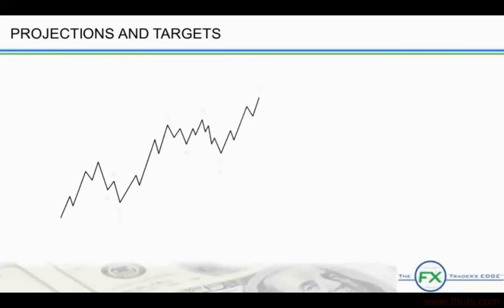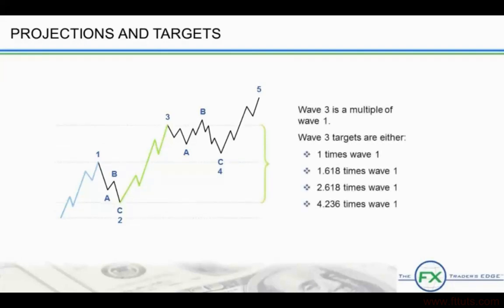Now we are going to apply Fibonacci ratio analysis to calculate impulse wave targets. This is where the golden ratio, 0.618, its inverse, 1.618, and the ratio found between alternate Fibonacci numbers, 2.618, come into play. We don't have too much to say about wave 1, other than it is used to target wave 3. Wave 3 targets are 1 times the length of wave 1, 1.618 times the length of wave 1, 2.618 times the length of wave 1, and 4.236 times the length of wave 1.